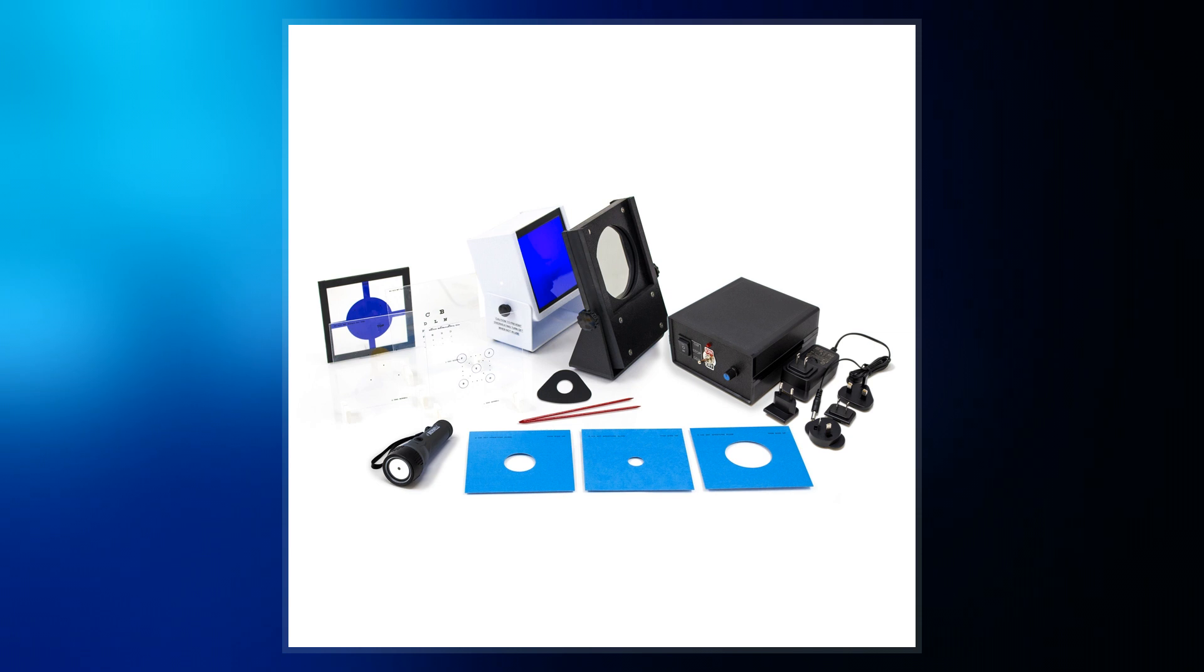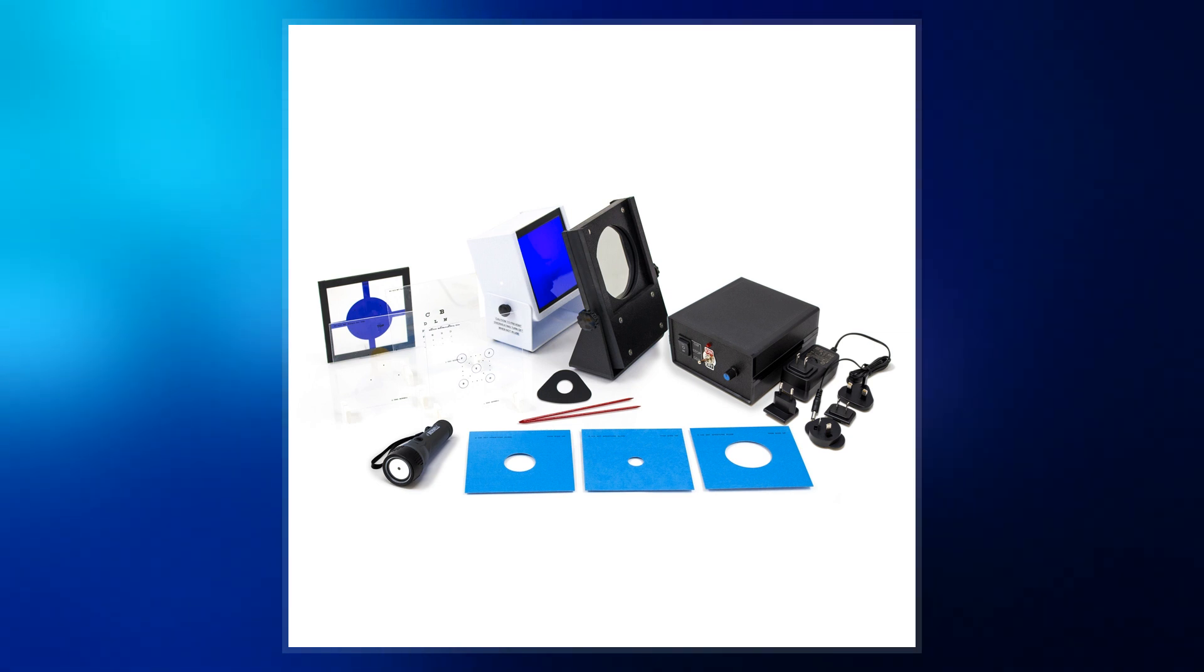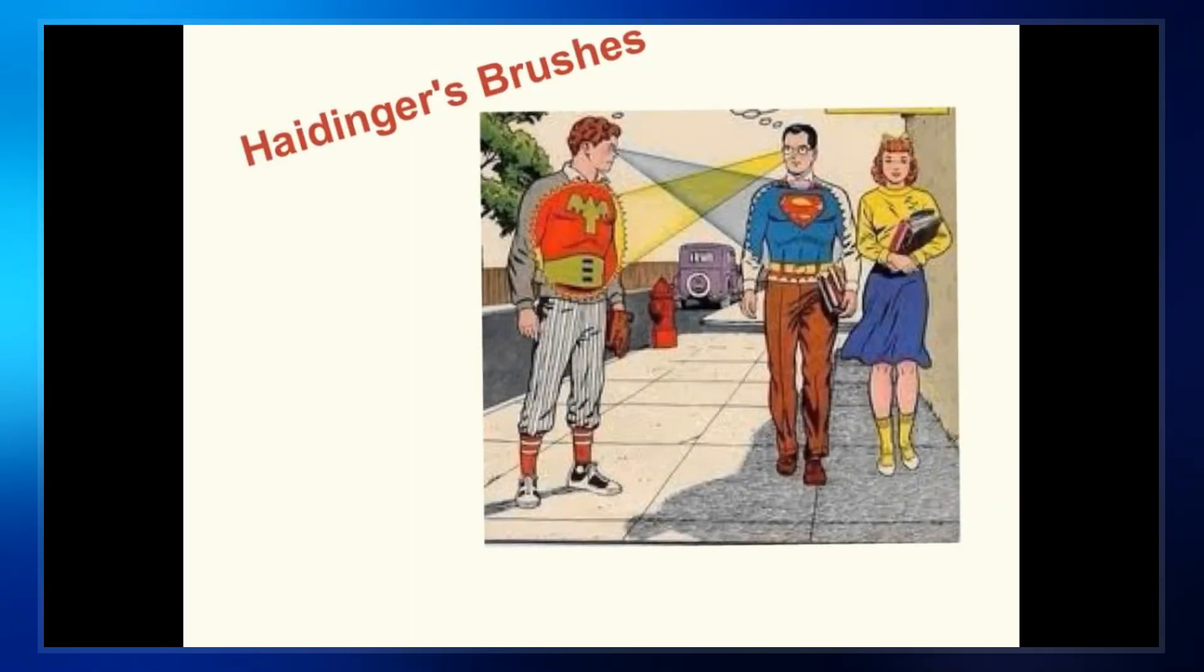It typically occupies roughly 3-5 degrees of vision, about twice or three times the width of one's thumb held at arm's length. The direction of light polarization is perpendicular to the yellow bar.